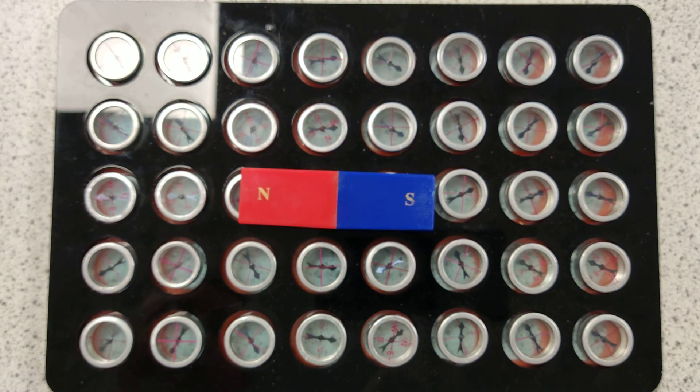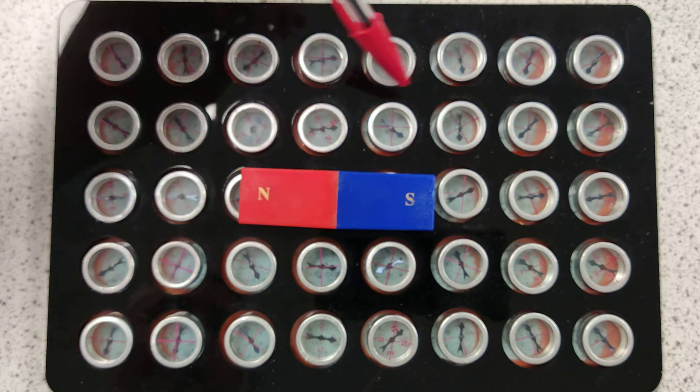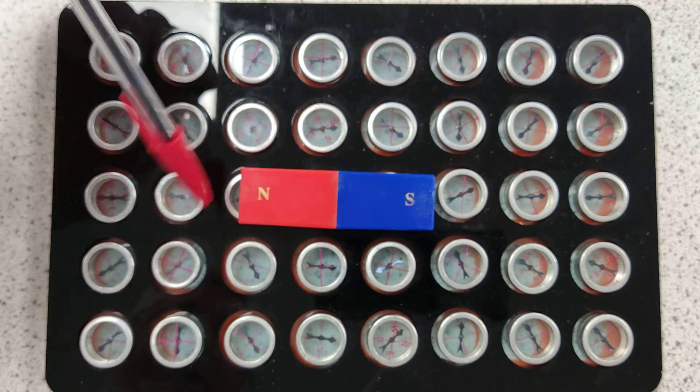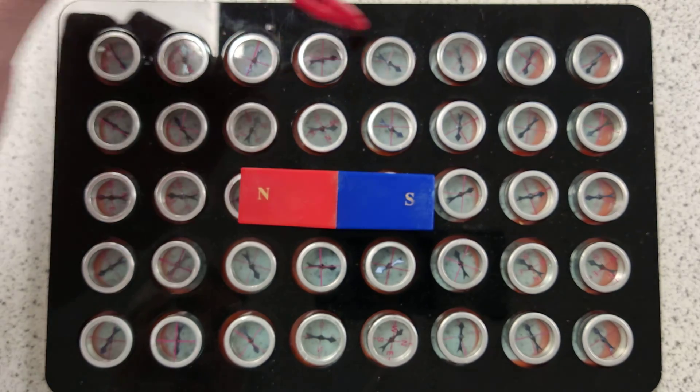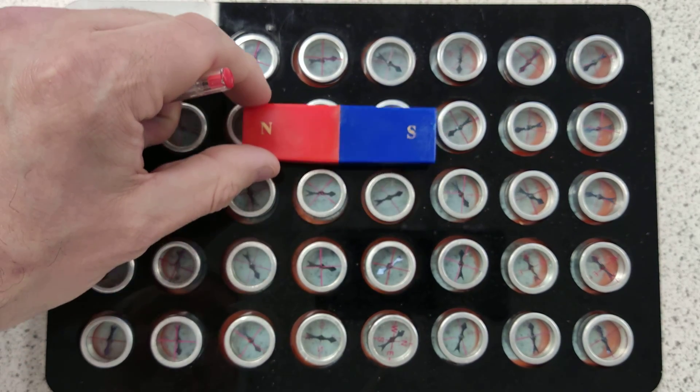You can see the direction of the plotting compasses. It kind of shows you the field. It's not perfect because some of these get magnetized, but you can see north to south, it kind of shows you the field. Move it around a little bit sometimes.